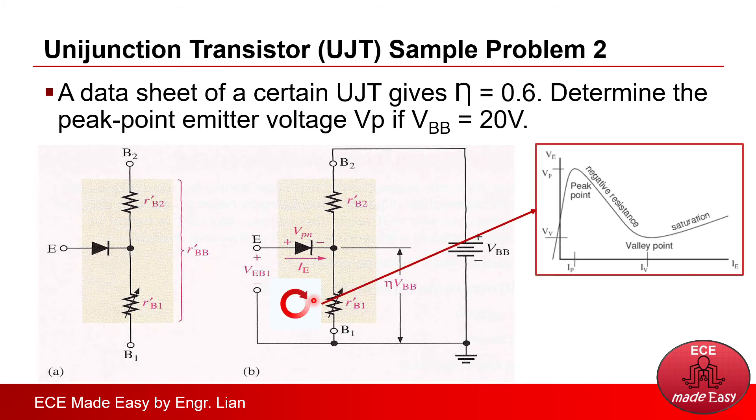And if you recall the principle of a UJT, the voltage at the emitter is actually varying from lowest to highest point, which are the valley point and the peak point. And for this sample problem, we are asked to determine the peak point or the Vp. And that is the maximum value based on this diagram.